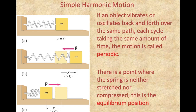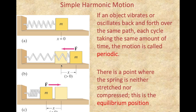So how do we define simple harmonic motion? If an object vibrates or oscillates back and forth over the same path, each cycle taking the same amount of time, the motion is called periodic. You have heard the word 'time period' if you've done the spring oscillation lab, circular motion, or the pendulum lab to calculate g. There is a point where the spring is neither stretched nor compressed — this is the equilibrium position. The position of the mass is always measured starting from the equilibrium position.